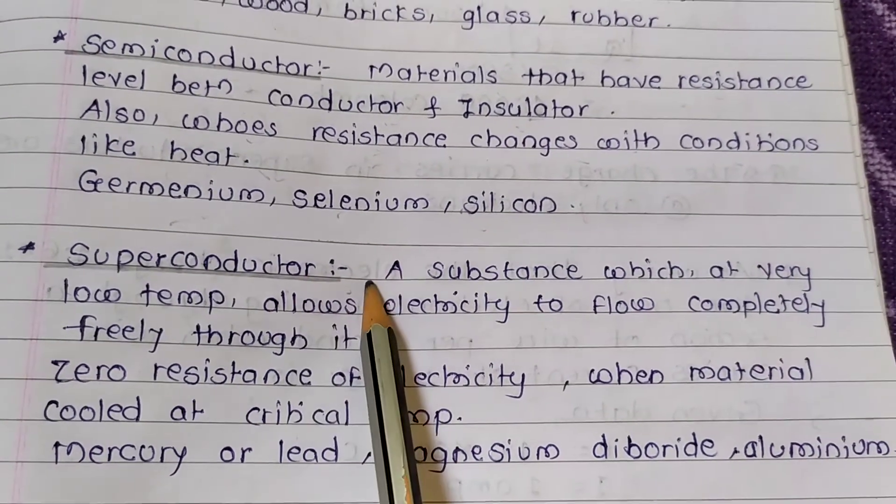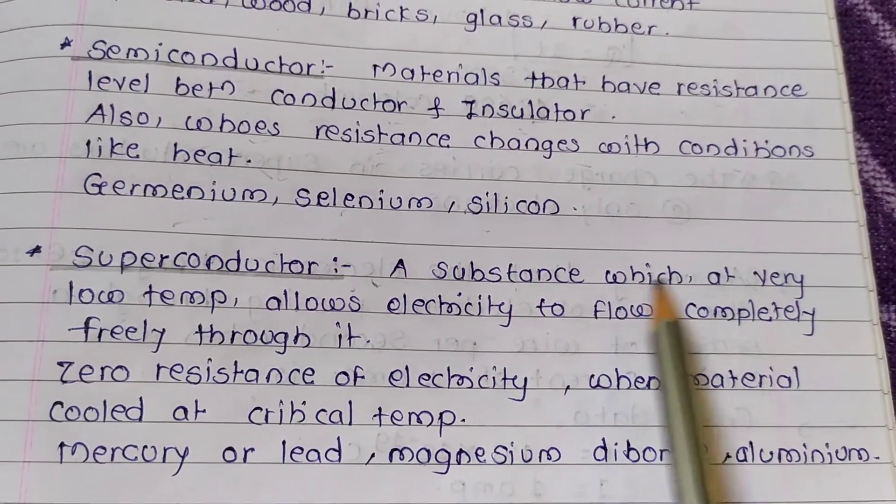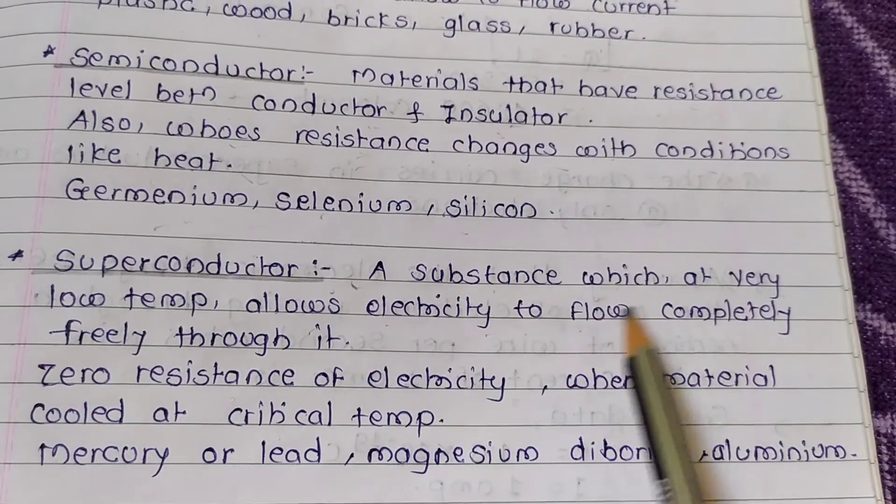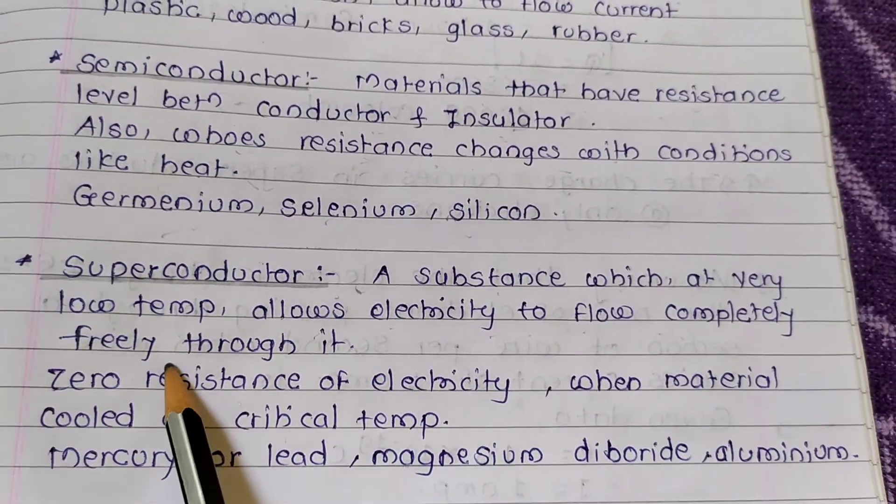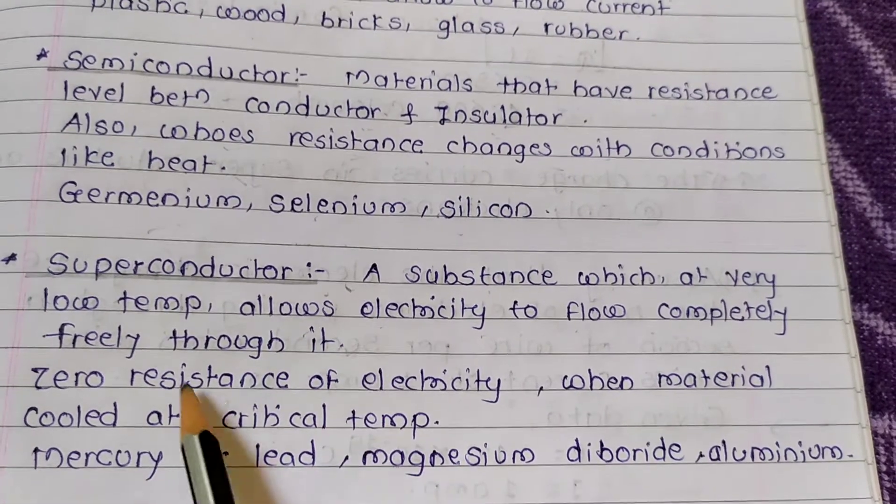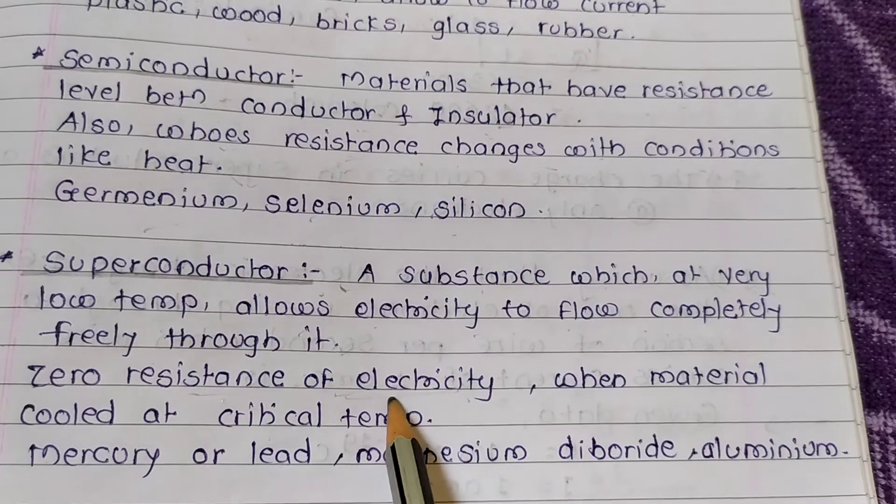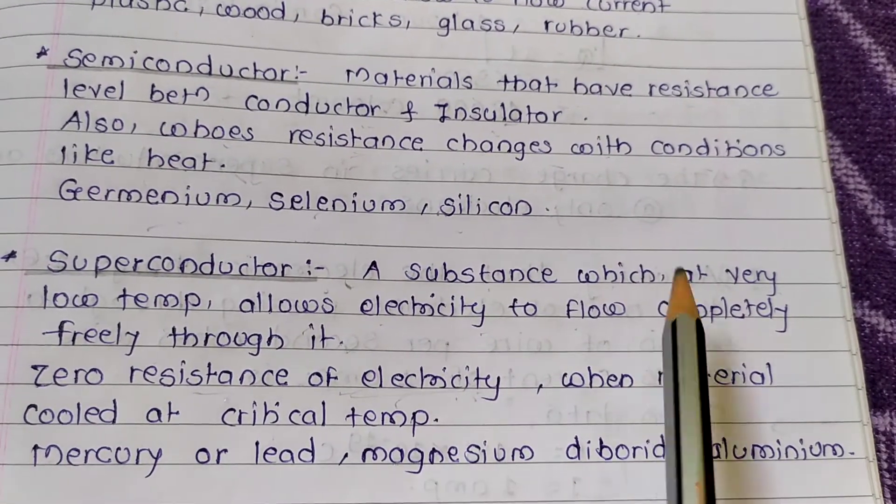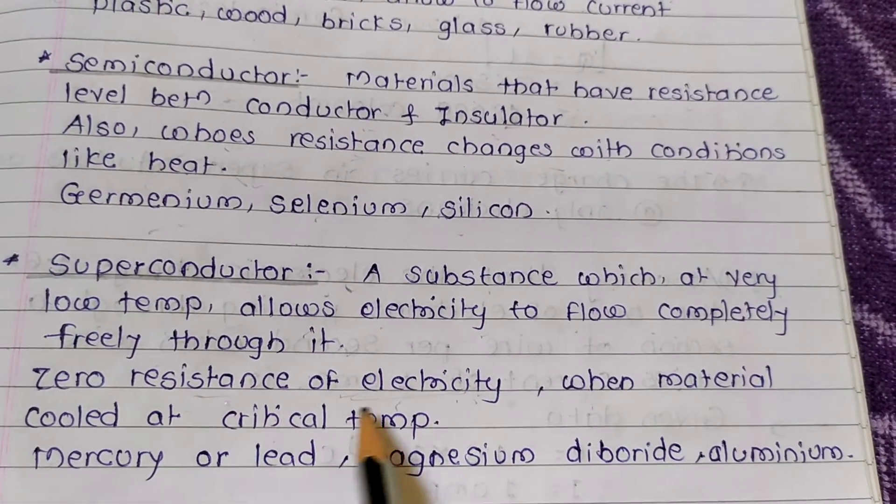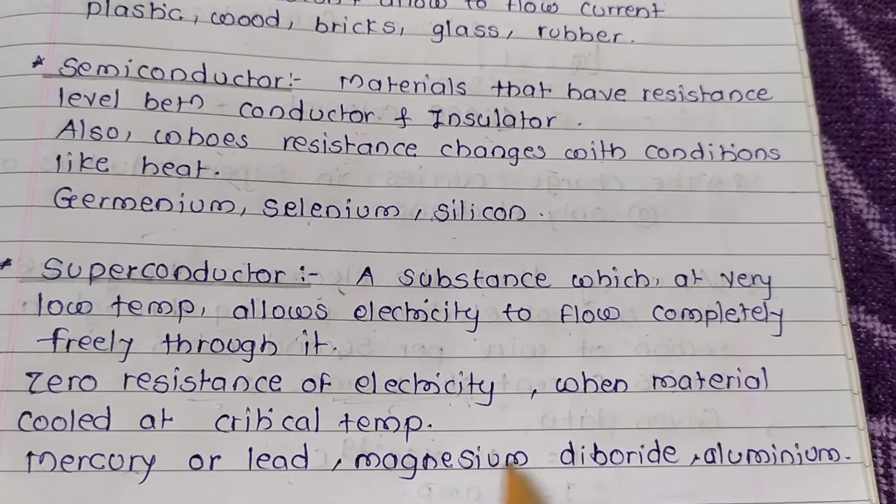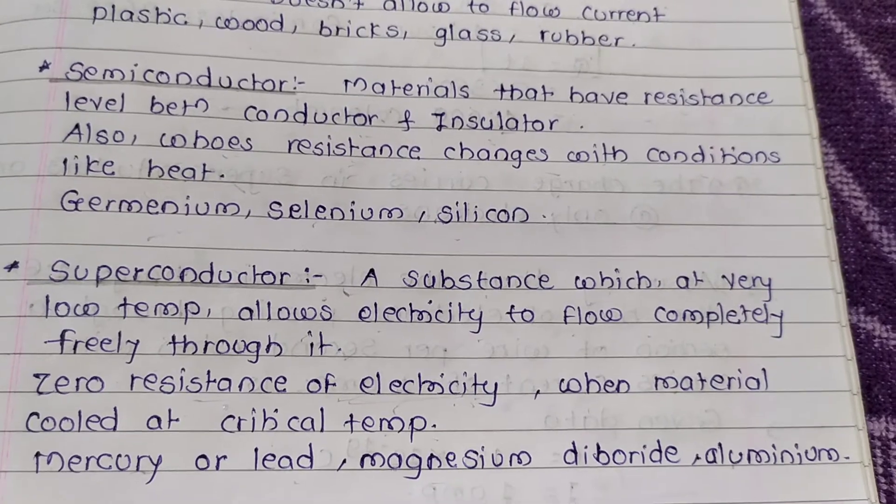Superconductor means a substance which at very low temperature allows electricity to flow completely freely through it. Zero resistance of electricity when material cooled at critical temperature. Mercury, lead, magnesium diboride and aluminium.